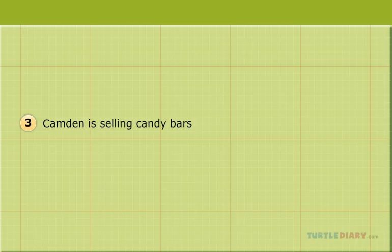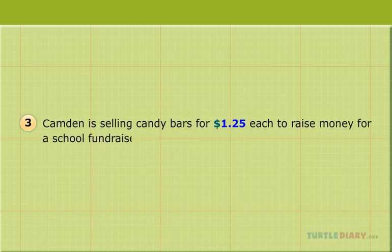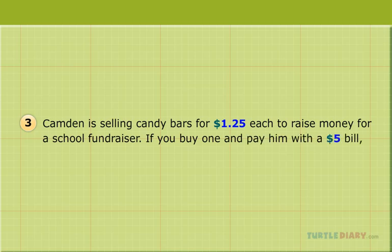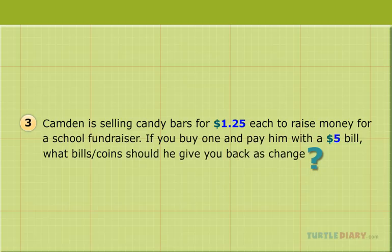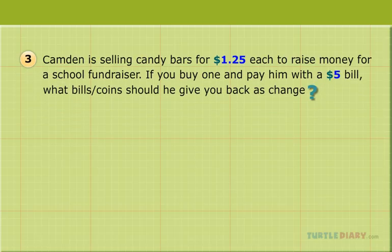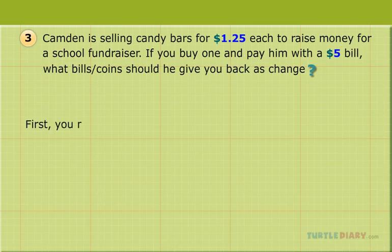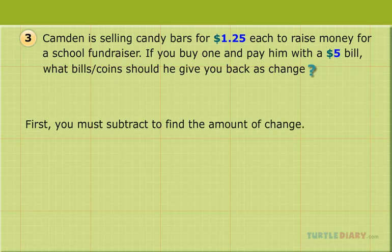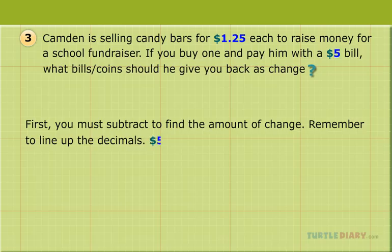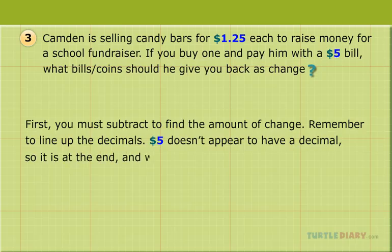Camden is selling candy bars for $1.25 each to raise money for a school fundraiser. If you buy one and pay him with a $5.00 bill, what bills and coins should he give you back as change? First, you must subtract to find the amount of change. Remember to line up the decimals. $5.00 doesn't appear to have a decimal, so it is at the end, and we can also fill in the understood zeros.